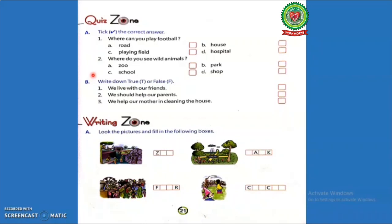Exercise B: Write down true T or false F. First, we live with our friends. Second, we should help our parents. Third, we help our mother in cleaning the house. Students, think and do this exercise yourself.